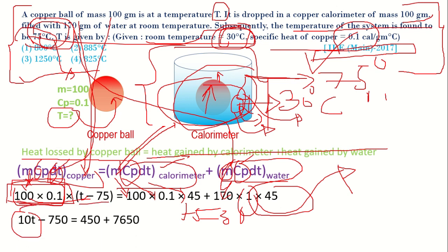And this T minus 75 if you multiply this 10 with this one you will be getting 10T minus 750 which equals 100 into 0.1 again 10 into 45 equals 450, and if you solve this one you will be getting 7650.